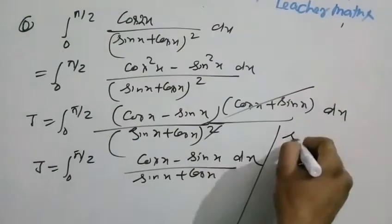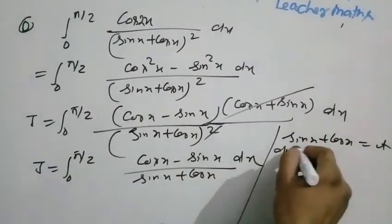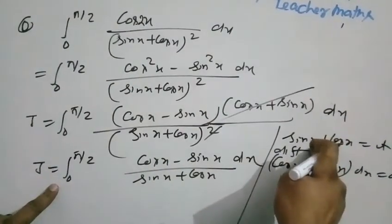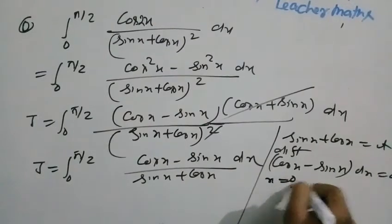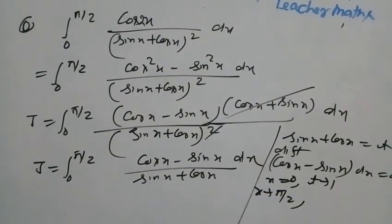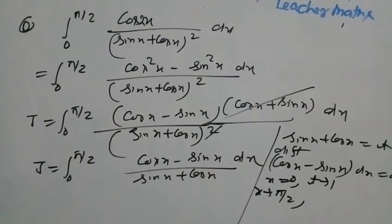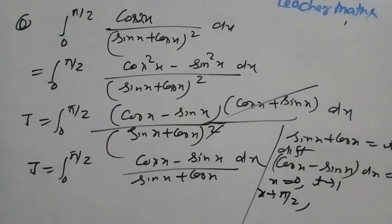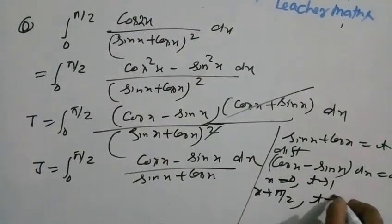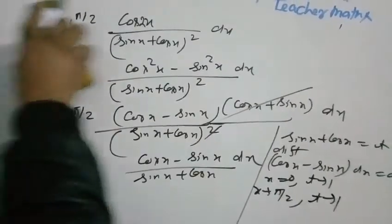Let t equal to sin x plus cos x. Differentiating, (cos x minus sin x) dx equals dt. Limit change: when x equals 0, t equals sin 0 plus cos 0 equals 0 plus 1 equals 1. When x equals pi by 2, t equals sin(pi by 2) plus cos(pi by 2) equals 1 plus 0 equals 1. Both limits are the same — t equals 1 to 1. Since the limits are identical, the integral equals zero.